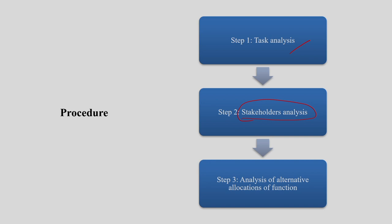The last stage is analysis of alternative allocation of function. Whatever process we have generated, we need to generate some kind of alternative allocations. If you have three or four varieties, you always have a choice of which is performing best among them. If your time permits, create more iterations; if less time, do three or four and then take it further.